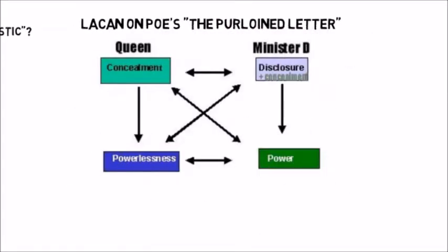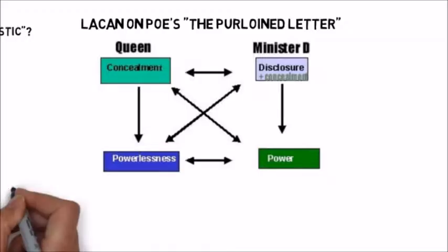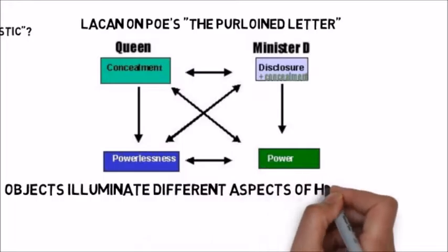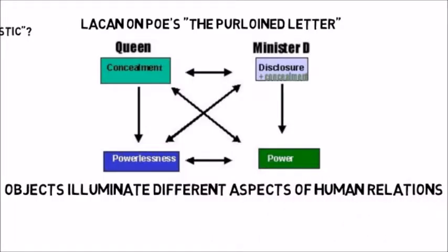The story of the purloined letter by Edgar Allan Poe gives us a different perspective on shared objects. In the story, a letter containing embarrassing information has been stolen from the Queen by a minister. The Queen wishes to conceal this information, and the minister — whose identity isn't known — threatens to reveal it and blackmails her. The Queen's power is relative to her ability to conceal the information in the letter, whereas the minister's power is based on his capacity to reveal its contents at any point. A detective finds the letter in the possession of the minister and swaps it for an identical letter which actually reveals the minister as the perpetrator of the crime. Consequently, this shared object of the letter has different meanings for the different characters which transform as the story unfolds. There is a famous analysis by Jacques Lacan of these dynamics. What this illustrates is that shared objects illuminate different aspects of human relations and the constraints that operate on individuals.